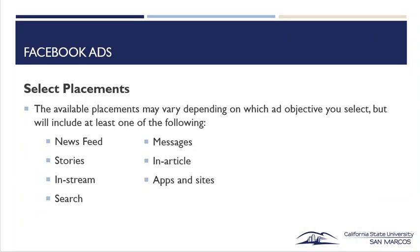Next, you'll want to select your placements. The available placements may vary depending on which ad objective you select, but will include at least one of the following: newsfeed, stories, in-stream, search, messages, in-article, apps and sites. The most common are newsfeed and stories.